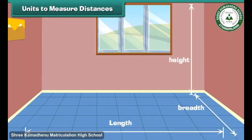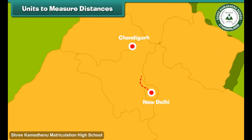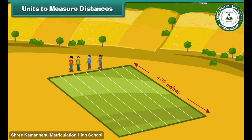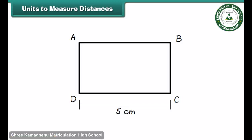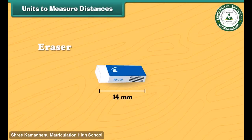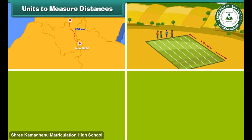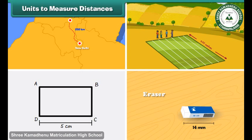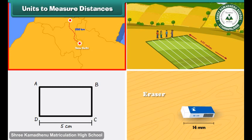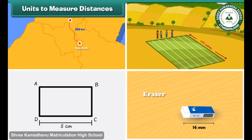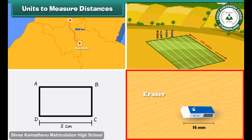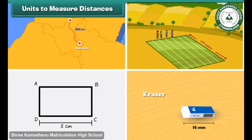Length, breadth, and height are the words used to express some distance. The distance between New Delhi and Chandigarh is 250 kilometers. Many students participated in a 400 meters race. The length of rectangle ABCD is 5 centimeters. The length of the eraser is 14 millimeters. We find that kilometer, meter, centimeter, and millimeter are the units used for measuring distances. Among these, kilometer is the biggest unit used for measuring long distances, while millimeter is the smallest unit used for measuring very small lengths. The standard unit of distance is meters.